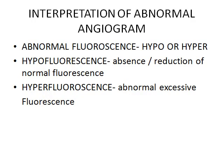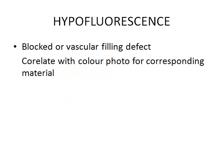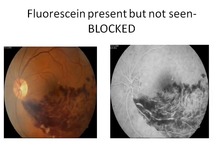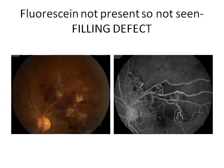Interpretation of an abnormal angiogram: it could be an abnormal fluorescence which is hypo or hyper. Hypofluorescence is absence or reduction of the normal fluorescence, and hyperfluorescence is an abnormal excessive fluorescence. Hypofluorescence is either a blocked fluorescence or it is due to a vascular filling defect. The key to differentiating between the two is to correlate with the color — when fluorescence is present but not seen due to an overlying blocking material such as blood, pigment, or fluid, then it is blocked fluorescence. While in a filling defect, the fluorescence is not present and so it is not seen.